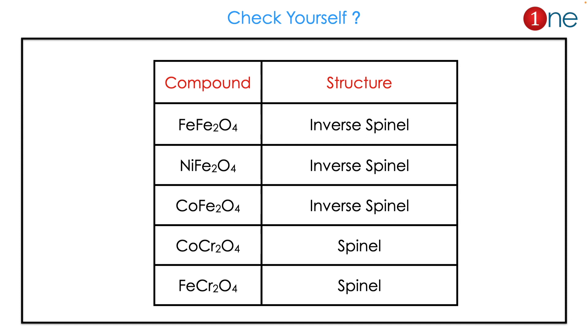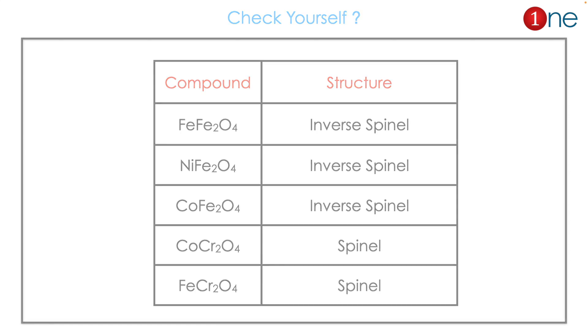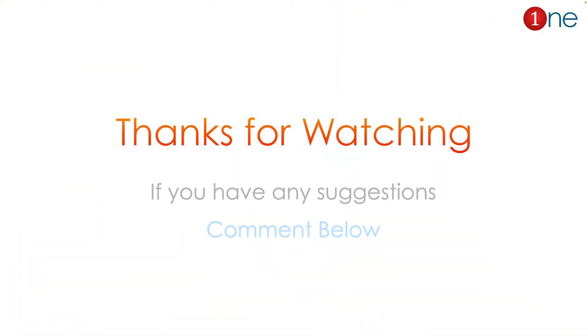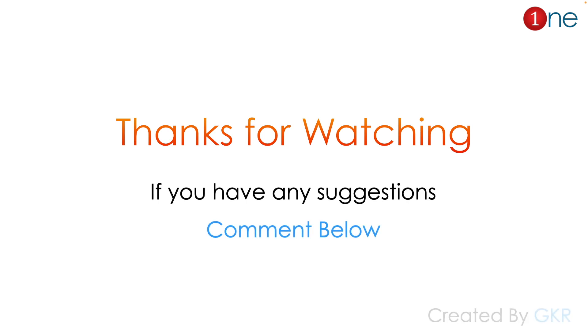In this way you can find whether a compound is spinel or not. Here I have given some examples to practice yourself — just find the CFSE of the 2+ and 3+ cations and you will find the real structure. That's all from this video, thanks for watching.